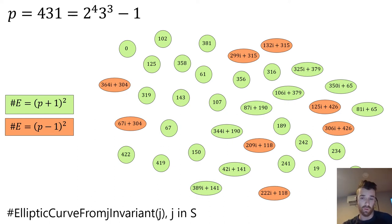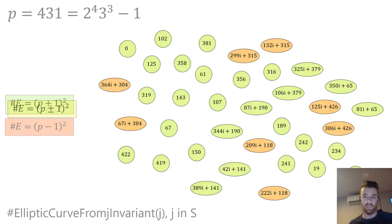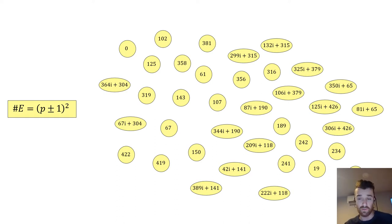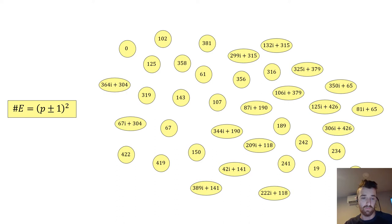In fact, we can use both of those group orders, because each node in the supersingular isogeny graph corresponds to elliptic curves defined over F_{p²} with group order (p+1)², and also elliptic curves with group order (p−1)². Both of these choices are valid at each node in the supersingular isogeny graph.